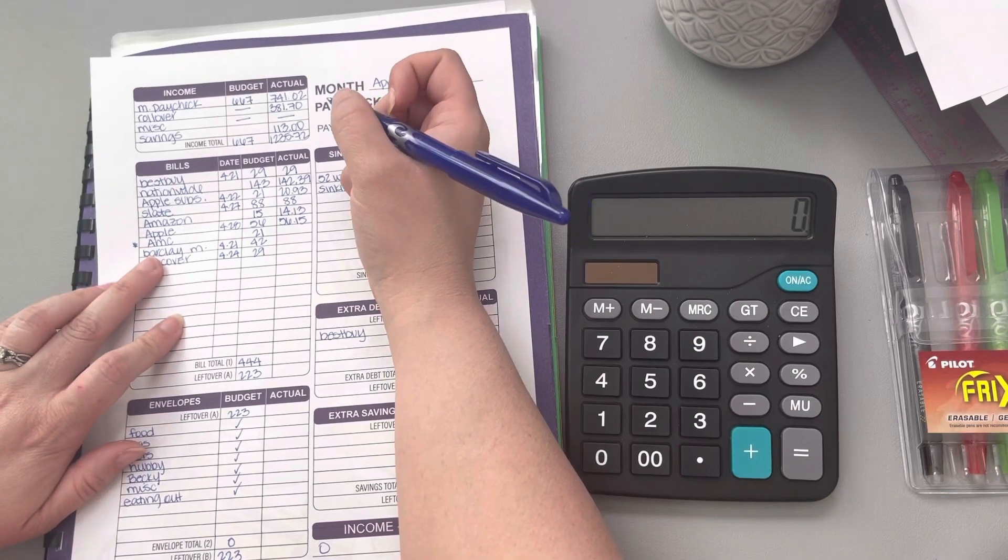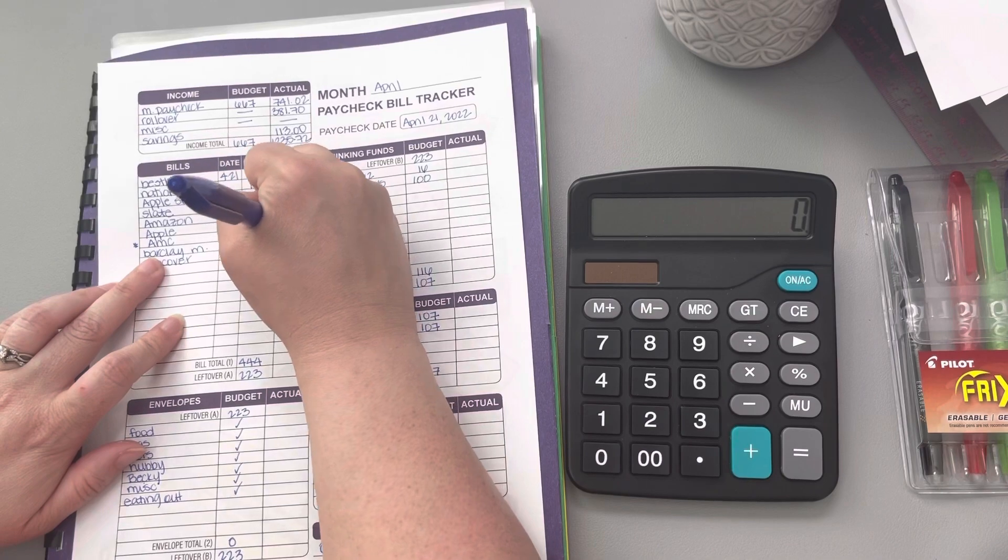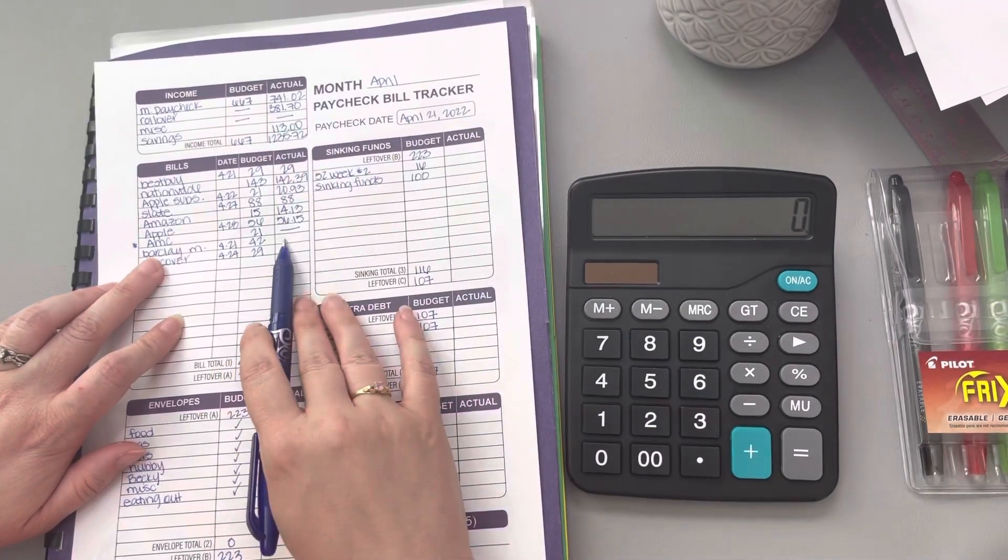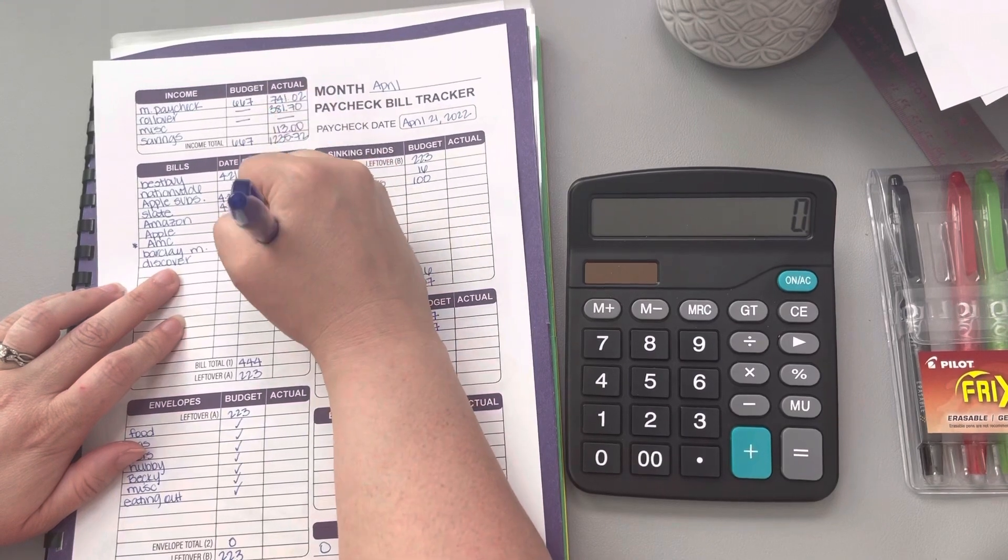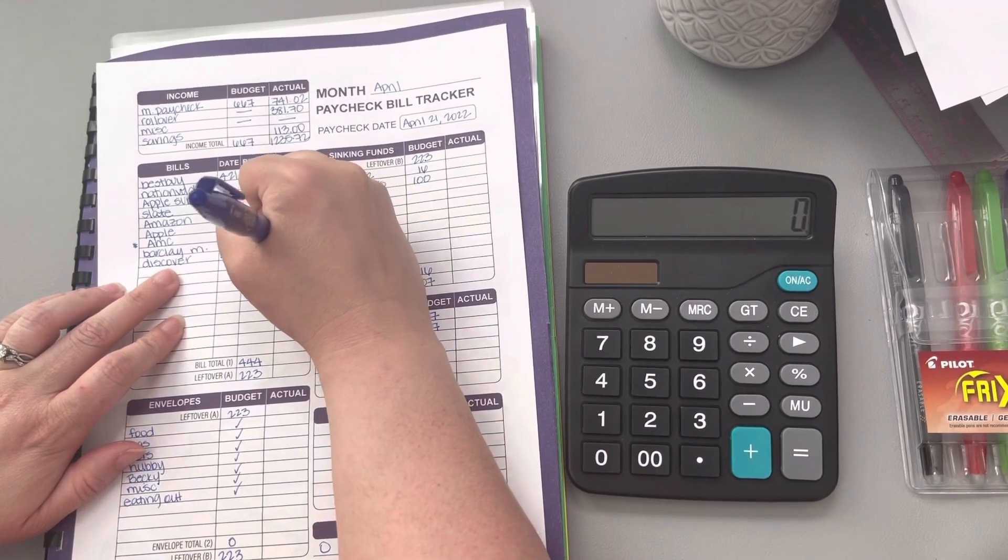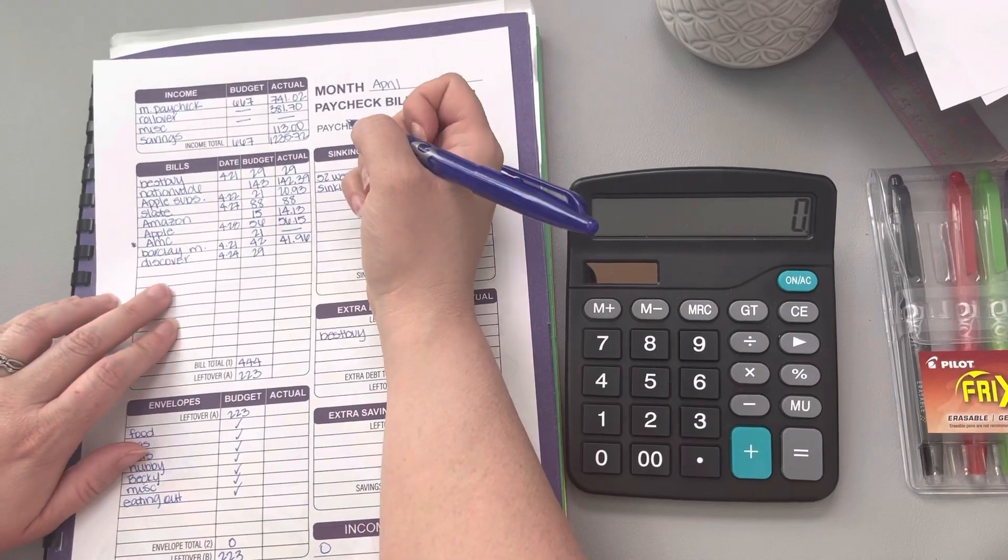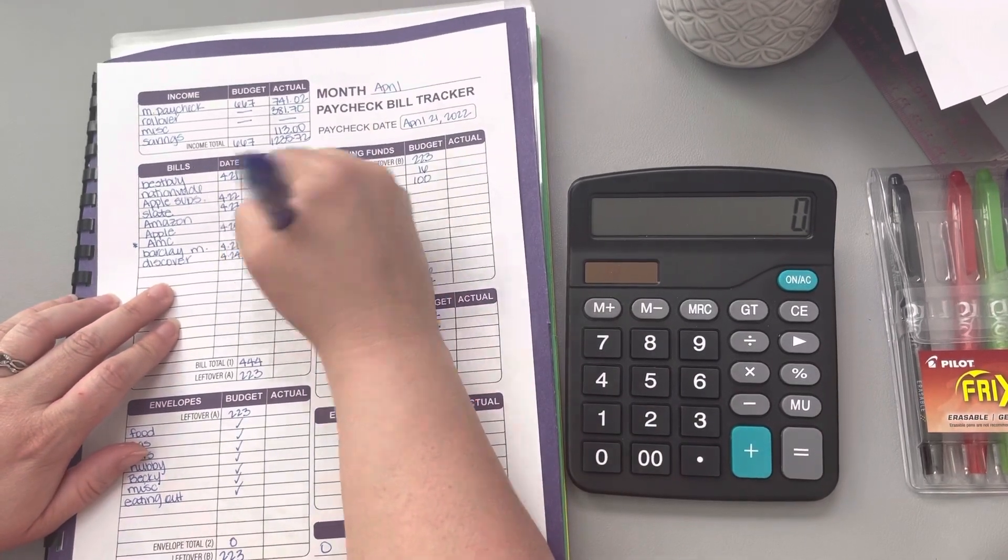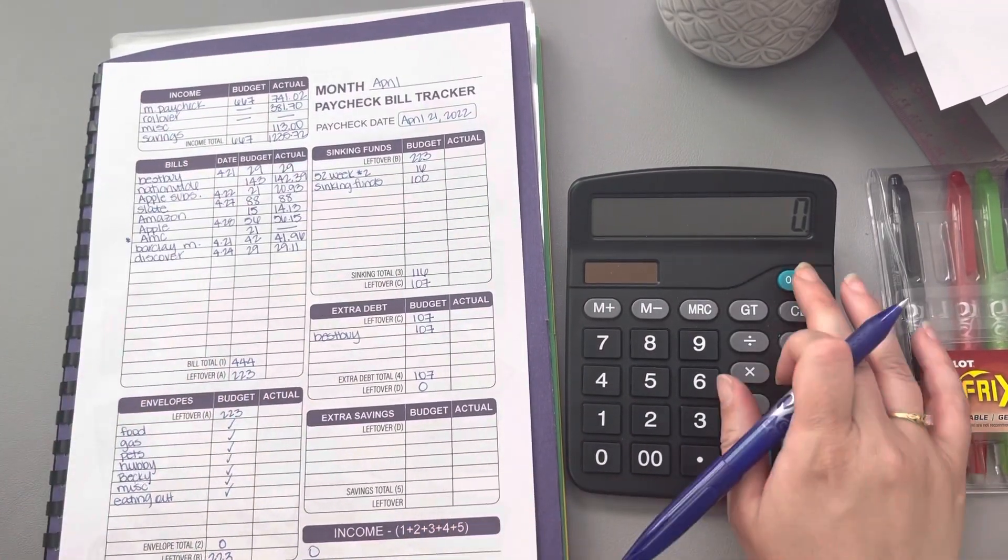I did verify with AMC and they are not going to be charging me the monthly fee this month, so that's going to be $0. The Barclay card came in at $41.96, and Discover is coming in at $29.11. So let's go ahead and add our bills together.